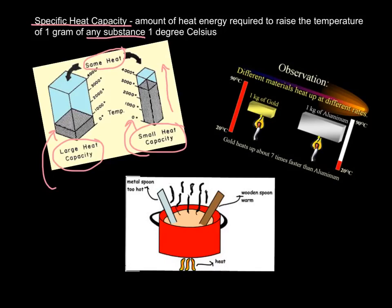Things like water have very, very high specific heat capacities. They heat up and cool down very slowly. Metals, on the other hand, have very low specific heat capacities. Metals will heat up and cool down very, very quickly.